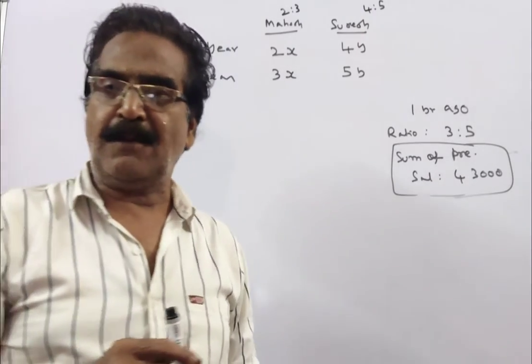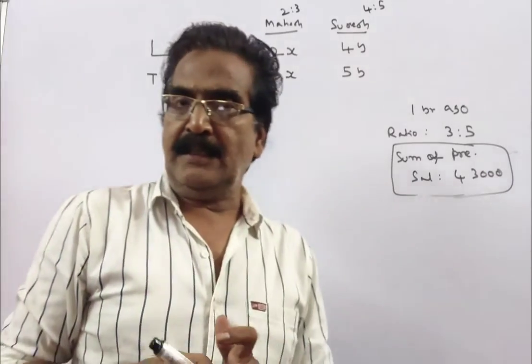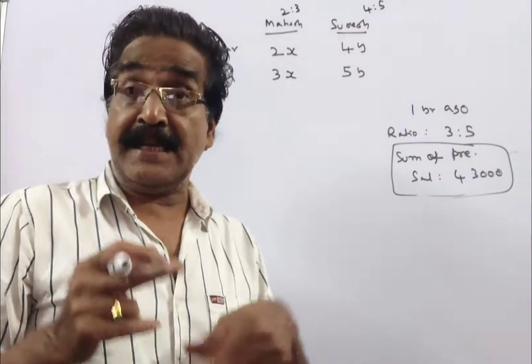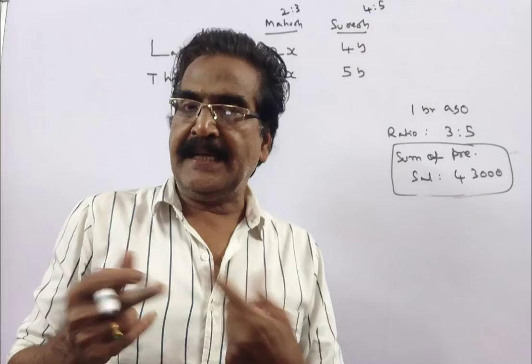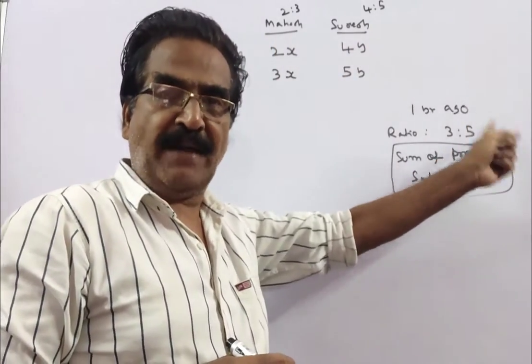Friends, the problem is given in the description box as usual. See friends, it is given that one year ago, the ratio of the salaries of Mahesh and Suresh is 3 is to 5.